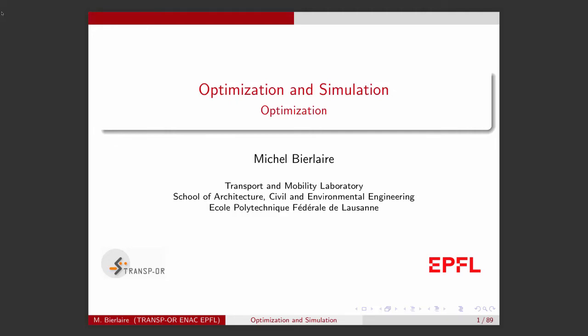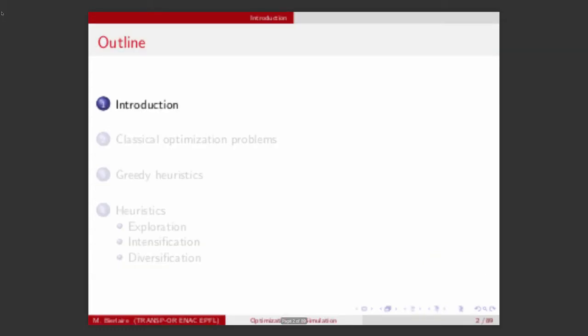Hi everybody, this is Michel Biarlère. We will be talking about the second part of the course on optimization and simulation — that is, we will talk about optimization. I will start with a brief introduction to connect the part on optimization with what we've seen before. I will then introduce some classical optimization problems before explaining how to solve them.